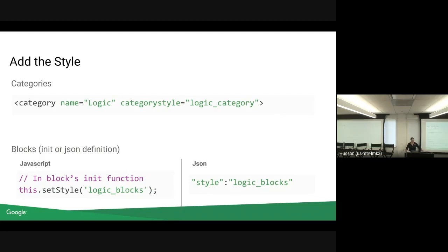Now, we have our theme and it's fully created. We want to sync that or combine that with categories and blocks. In order to do this for categories, we just add that category style attribute in the XML and that just has the style name that we created for our themes.